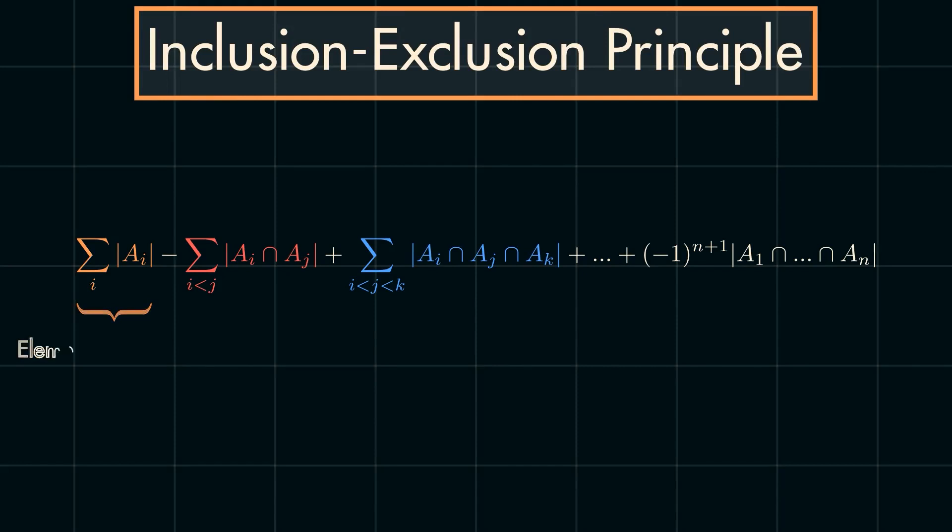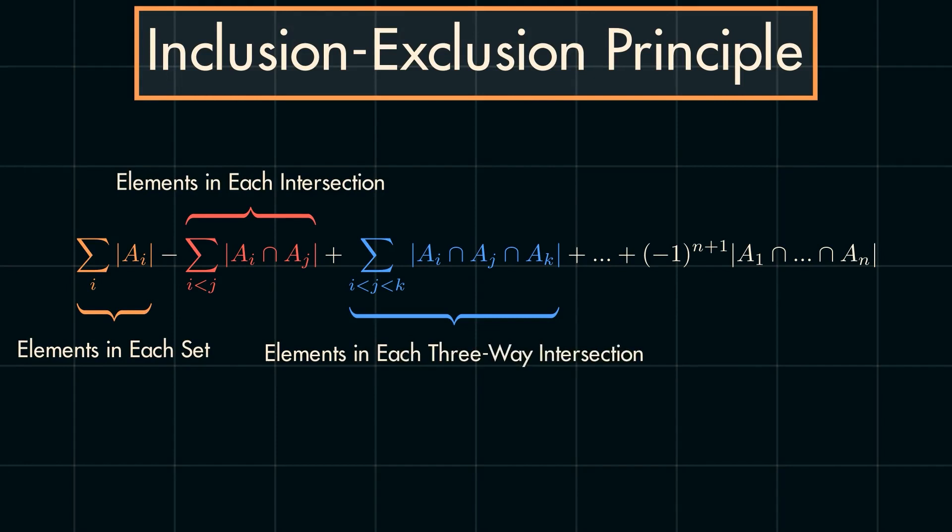We can summarize this principle with the following equation. Here, this first portion represents summing the number of elements of each individual set. This next portion is removing the double-counted elements that are in each pairwise intersection, and so on.